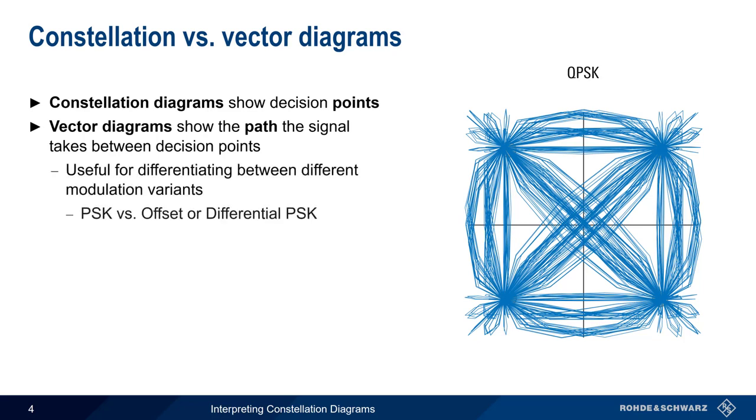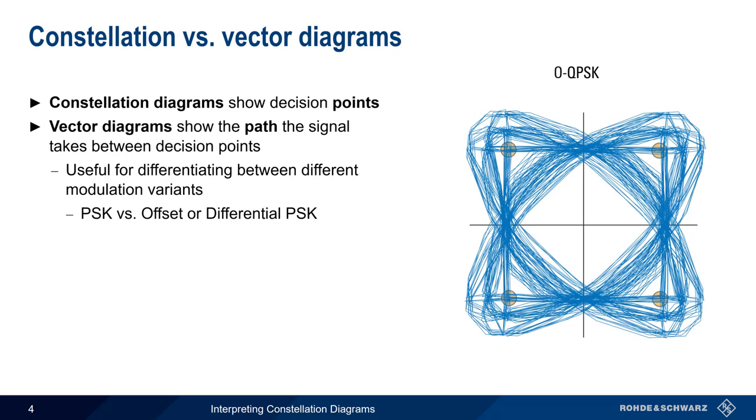For example, regular PSK and offset PSK have identical constellation diagrams, but it's easy to distinguish between them using vector diagrams.